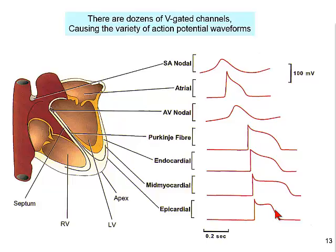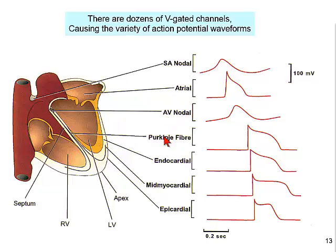Everybody will have had an electrocardiogram, so this is a topic that is extremely well researched among cardiologists and electrophysiologists. We see here the chambers of the heart and the various nodes: the sinoatrial node, located between the sinus and the atrium; the atrioventricular node, located between the atrium and the ventricle; the Purkinje fibers; and the endocardial, mid-myocardial, and epicardial fibers.